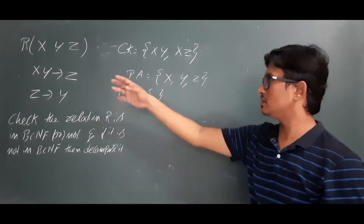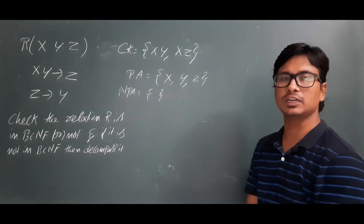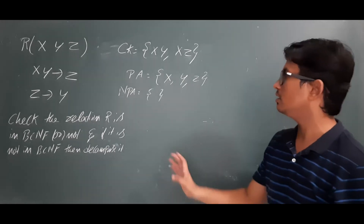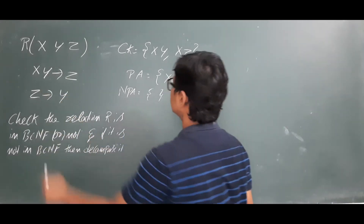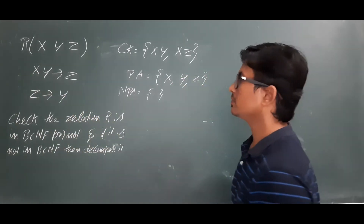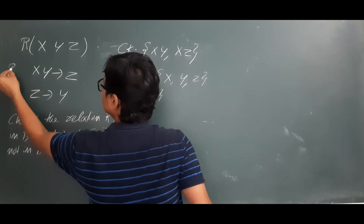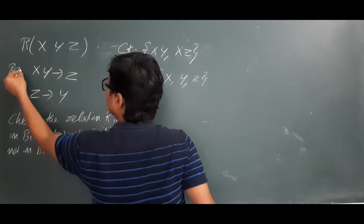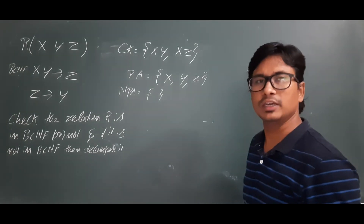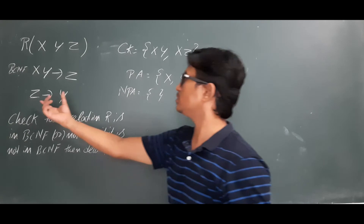We can now check whether these functional dependencies involve partial dependency, transitive dependency, or whether they are in BCNF. The FD X,Y → Z is there. As X,Y is a candidate key, if the left-hand side is a super key or a candidate key, I can directly say that it is in BCNF.